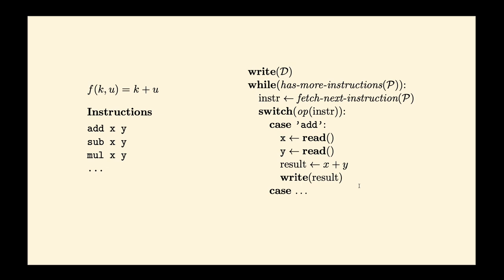Let's say we have an interpreter for some abstract language with instructions like ADD, SUB, MUL. The general structure of an interpreter writes data to some memory, then loops over instructions — it fetches instructions one by one until it reaches the end of the program. It reads the first instruction, decodes it, and tries to evaluate it. If it reads ADD, it reads arguments X and Y, implements the semantics — which is X plus Y — and writes back the result.